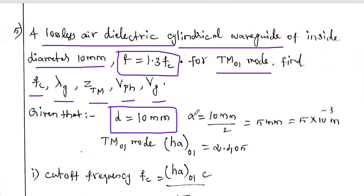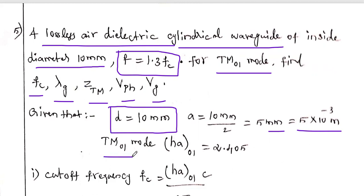Convert diameter to radius: A = 10/2 = 5 mm = 5×10^-3 meters. This unit conversion is critical — if done incorrectly all answers will be wrong. To convert centimeters to meters divide by 100; for millimeters divide by 1000. For TM01 mode, Ha_01 = 2.405, and f = 1.3 × Fc once Fc is calculated.